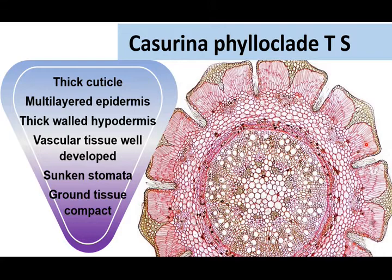The ground tissue is also very compact, and the xylem is very well developed. These are some of the most important xerophytic characters seen in Casuarina and all non-succulent xerophytes.